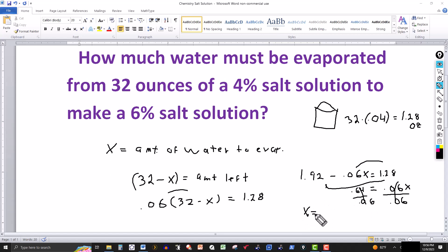This tells me that the amount of water that needs to evaporate is 10.67, rounded to two places, and that's going to be ounces. So this is the amount of water that needs to be evaporated or removed, 10.67 ounces.